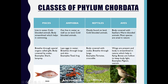First, we come to Class Pisces. The animals coming under this class of Phylum Chordata live in water. They are mainly cold-blooded. They have a streamlined body which helps them in swimming. For breathing, they have special organs called gills, and their body is generally covered by scales. Examples include shark and lamprey.